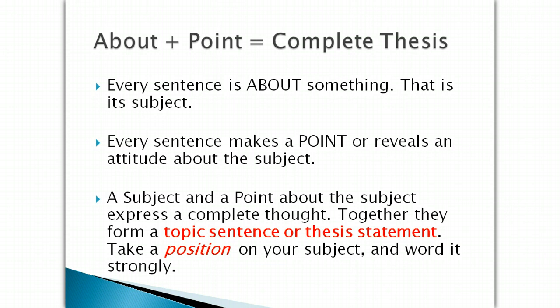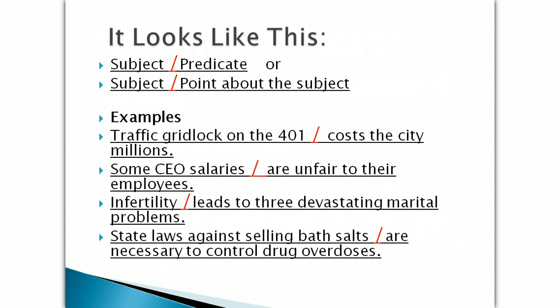Every sentence is about something — that's its subject. It might be about the economy, the presidency, or the cost of tomatoes in your grocery market, but it's always about something. And every sentence also makes a point or reveals an attitude about the subject, if it is to be a topic sentence or a thesis statement. A subject and a point about the subject together express a complete thought. They form the topic sentence or thesis statement, and it's important that you take a position on your subject and word it strongly. It looks like this if you were to graph it out, like diagramming sentences — the subject and then the predicate, or the subject and then the point about the subject.